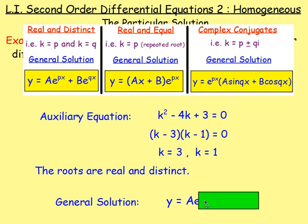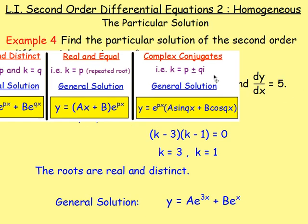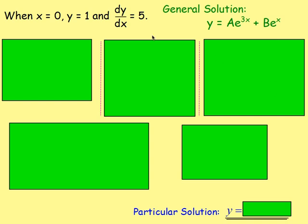So here we're going to have y equals ae^(3x) plus be^(x). If you get the 1 and the 3 the other way around, it makes no difference. So that is the general solution, but we have been told the additional information: when x is 0, y is 1, and dy/dx equals 5.